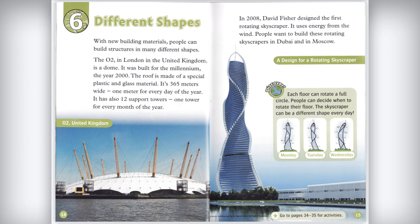In 2008, David Fisher designed the first rotating skyscraper. It uses energy from the wind. People want to build these rotating skyscrapers in Dubai and in Moscow. Each floor can rotate a full circle, and people can decide when to rotate their floor. The skyscraper can be a different shape every day.